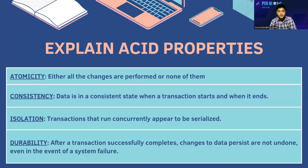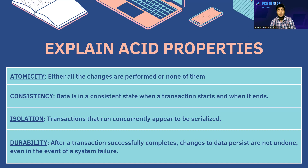Explain ACID properties. ACID stands for: A — Atomicity, C — Consistency, I — Isolation, D — Durability. Atomicity means either all the changes in a transaction are performed or none of them — all transactions are performed or nothing is performed. Consistency means data is in a consistent state when a transaction starts and when it ends — the value should be the same from start to end.